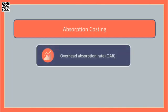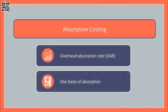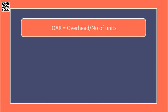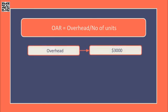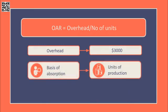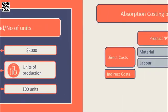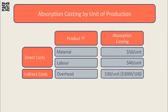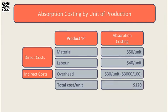Traditionally, under absorption costing, the overhead per unit is calculated based on the overhead absorption rate, which uses one basis of absorption — one way to divide the overhead amongst the units. So total overhead is divided by the total number of labour hours or the total number of units produced. For example, if total company overhead equalled $3,000 and overhead was absorbed based on units produced, with 70 units of Product P and 30 units of Product Q — 100 units in total — then the overhead absorption rate per unit would be $30 ($3,000 ÷ 100 units). Total cost per unit of P equals $120.